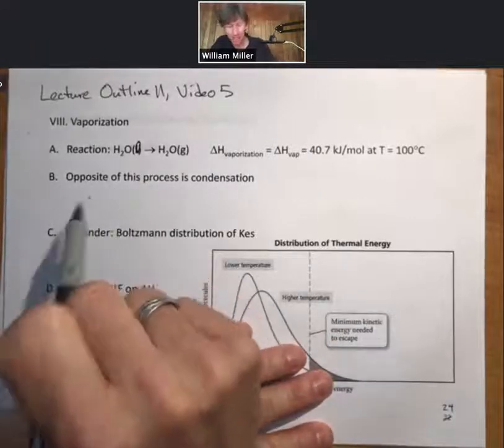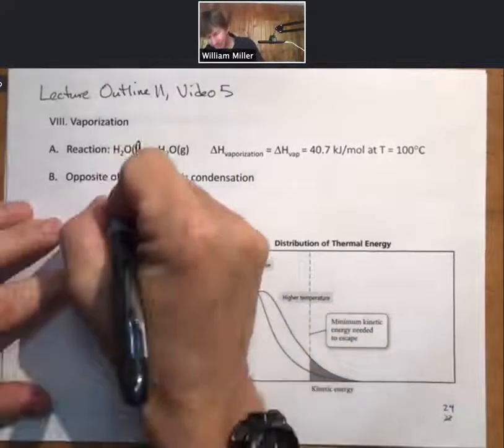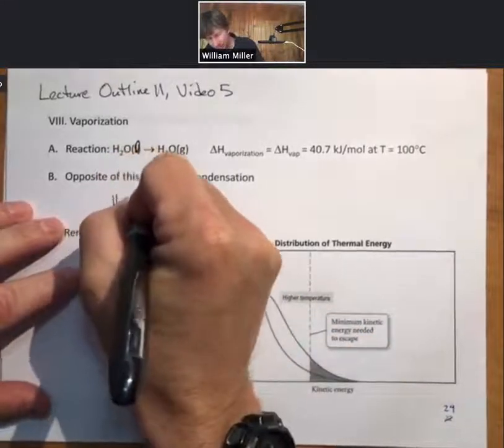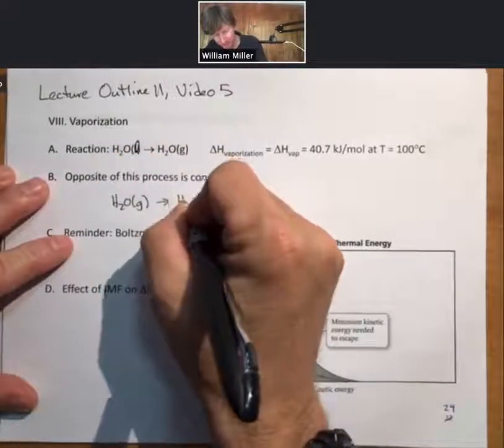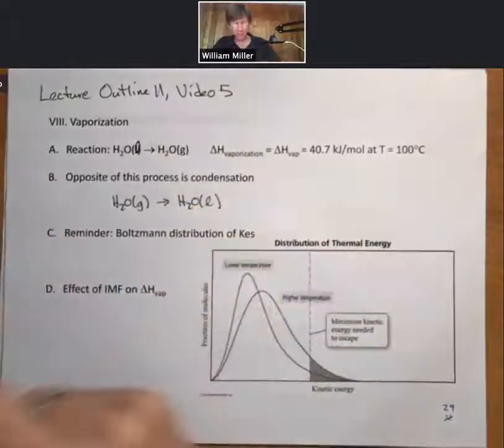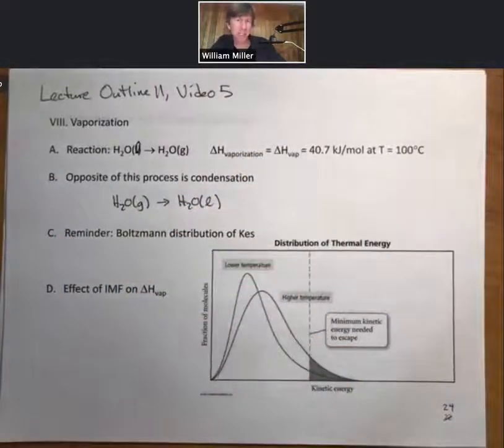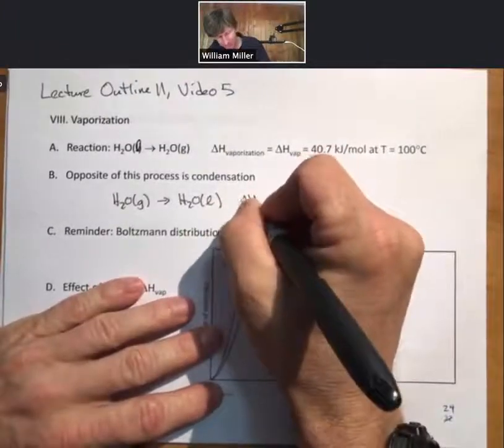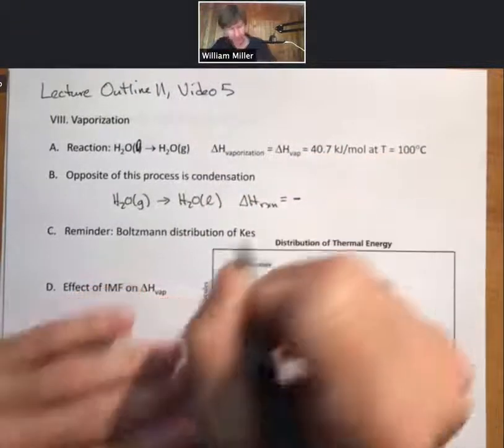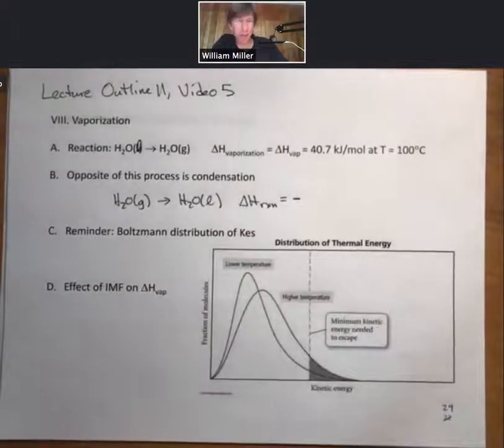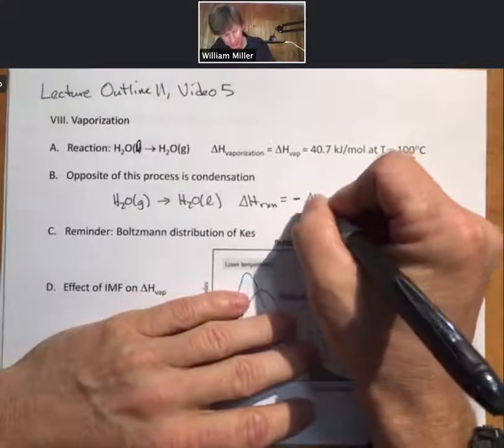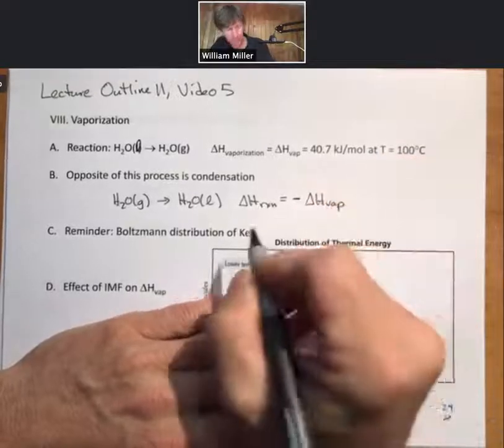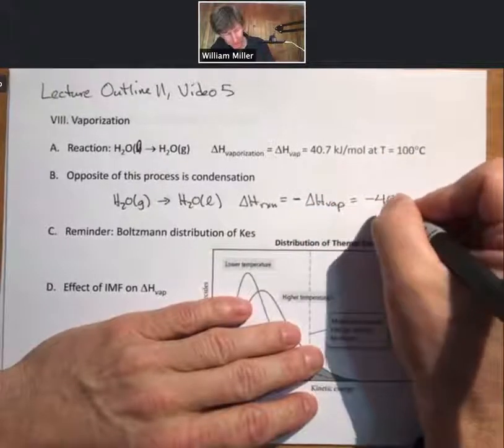The opposite of this process is condensation. We know from prior lectures that when we switch the reactants and products so we have H2O gas going to H2O liquid, that simply changes the sign of the delta H. For this reaction, which we could also call delta H condensation but we don't use it nearly as much as vaporization, we'll just leave it as delta H reaction equals minus delta H vaporization, which is minus 40.7 kilojoules per mole.